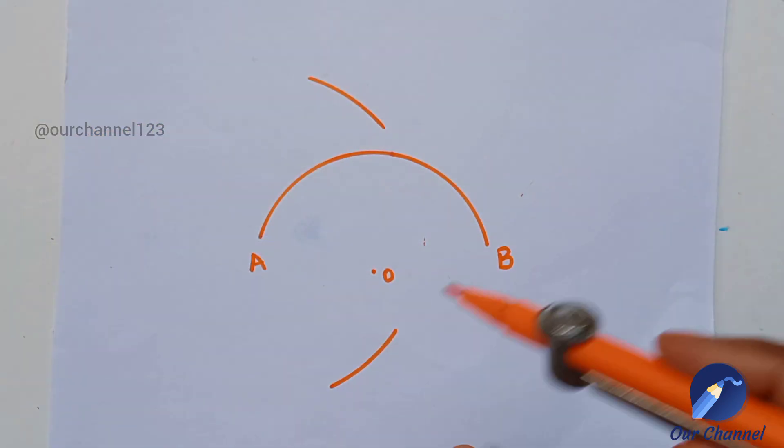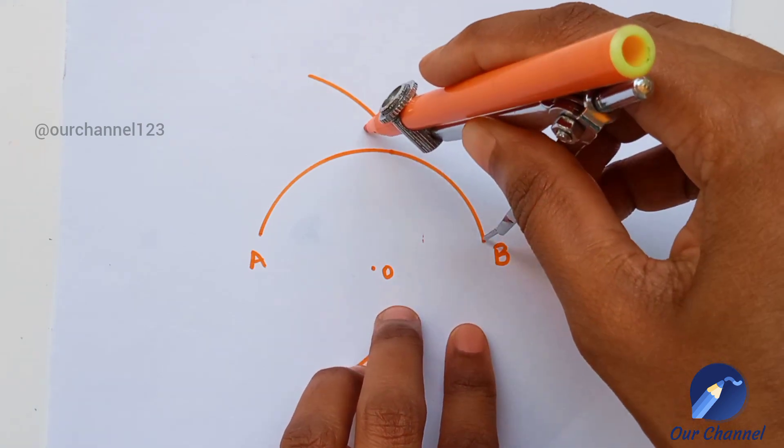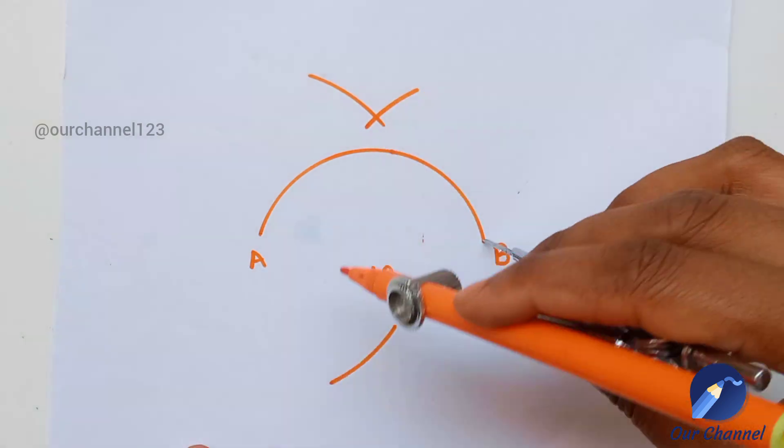With B as center, now with the same radius, draw two arcs intersecting the previous arcs.